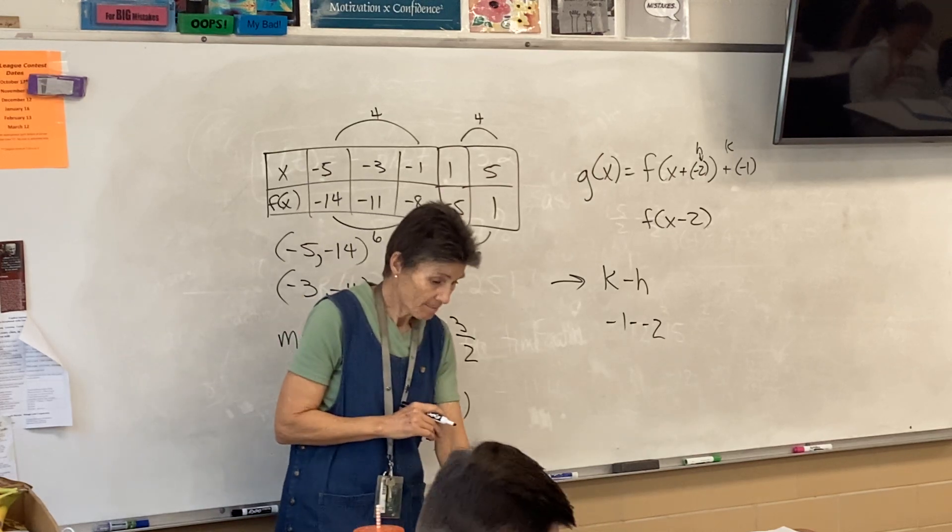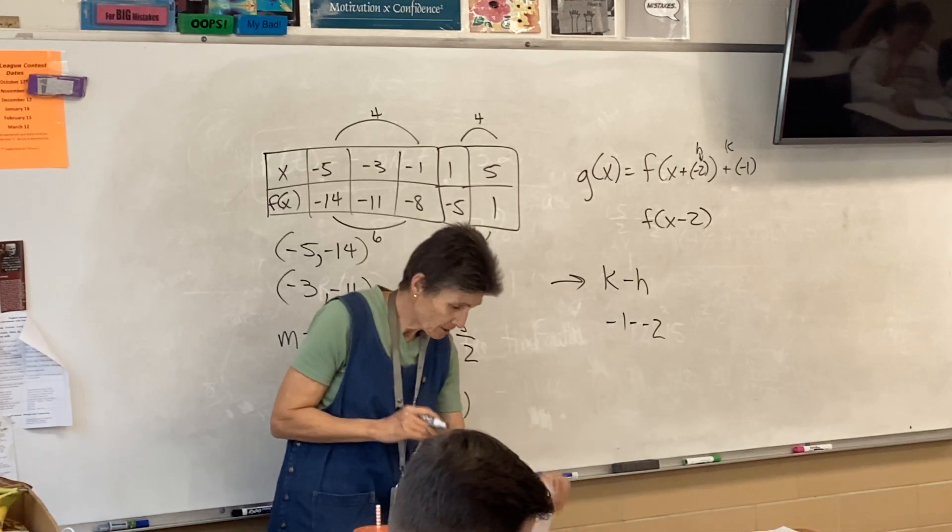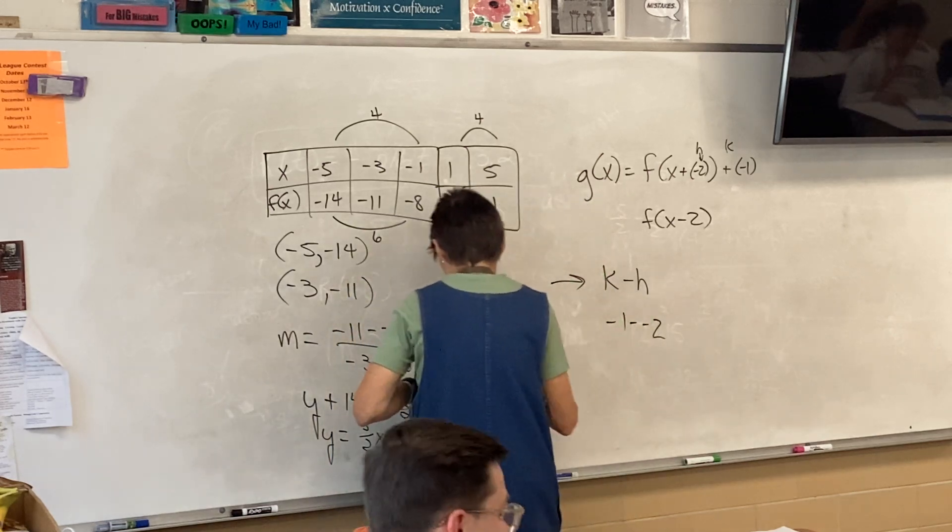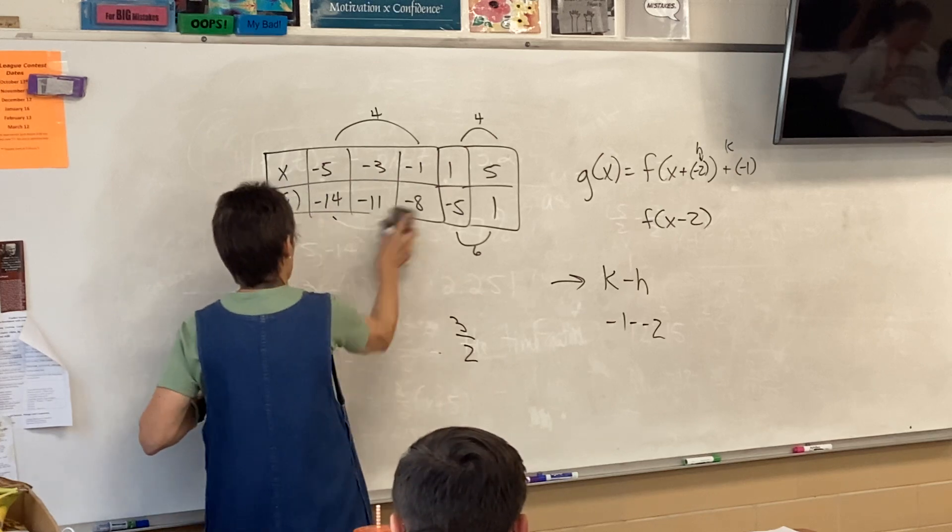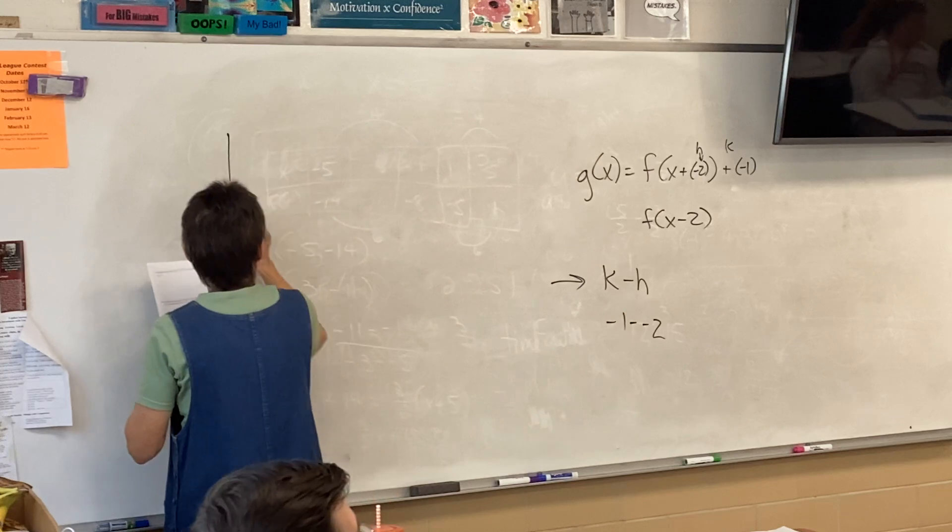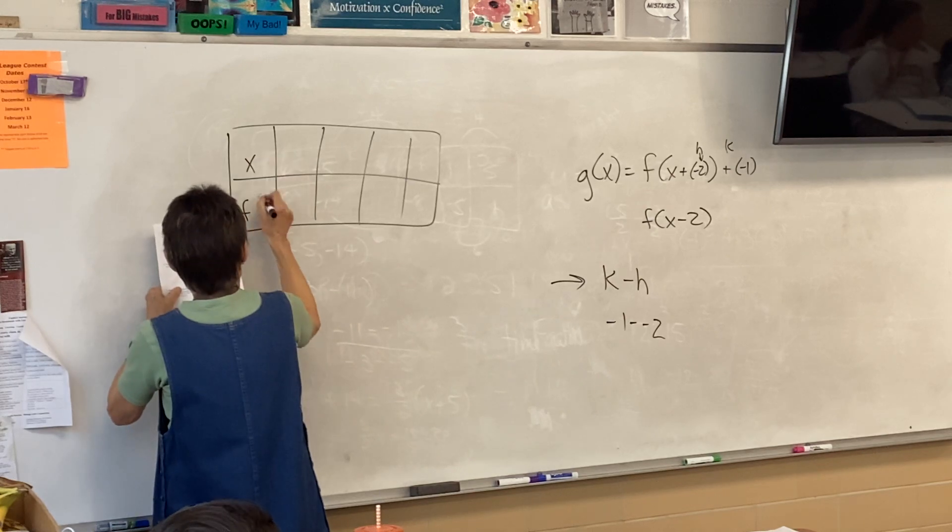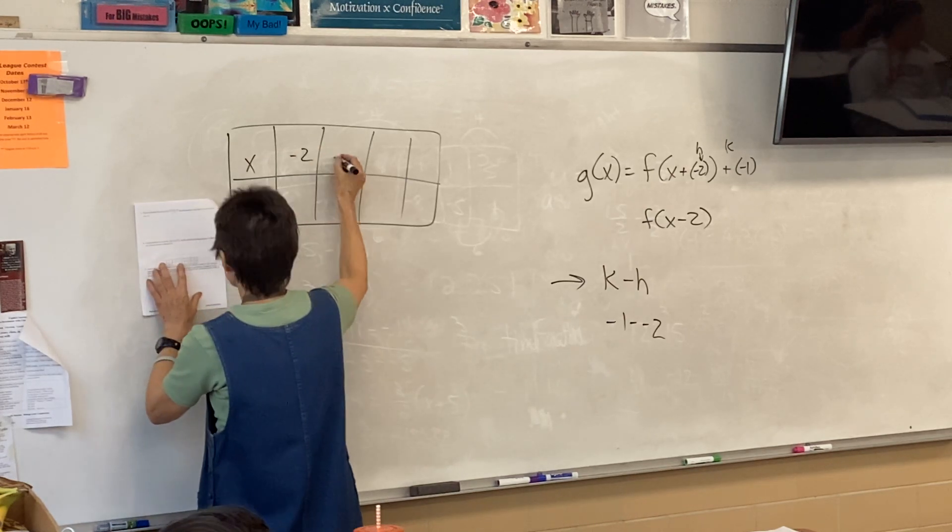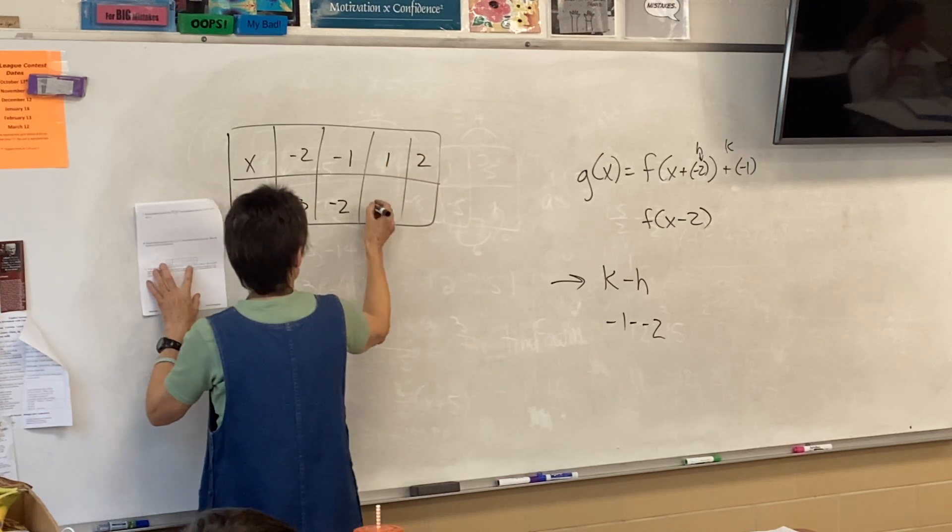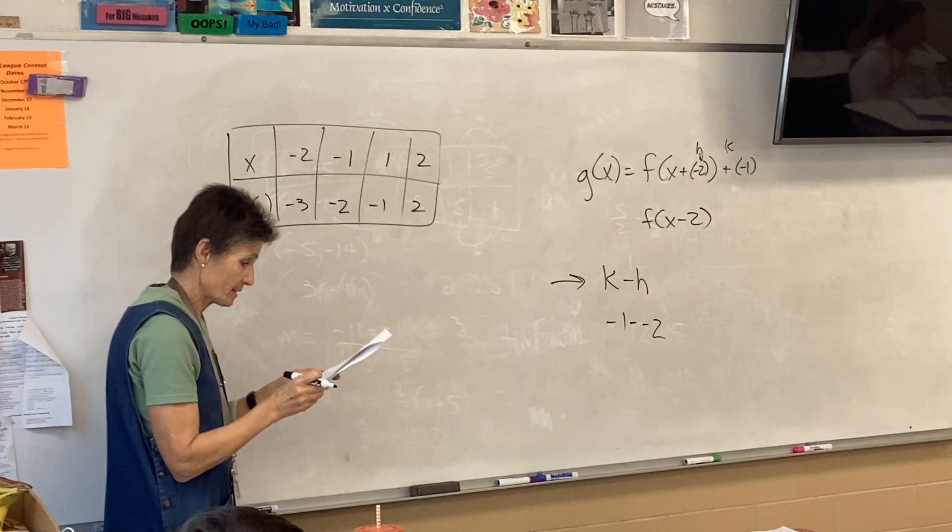Anna? N. N. Sets of values of the polynomial function are shown above. All right, so it's another table. All right. So, we've got x values: negative two, negative one, one, two. And y values: negative three, negative two, negative one, and two.